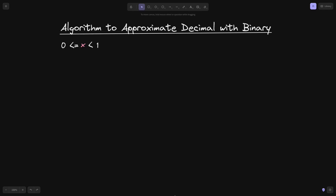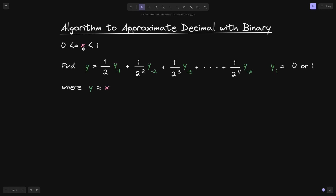Let's say we have a number x between 0 and less than 1. What we want to do is find y, where y approximates x. y is in the form: 1 over 2 times y₋₁, plus 1 over 2² times y₋₂, plus 1 over 2³ times y₋₃, and so on up to 1 over 2ⁿ times y₋ₙ. Each of these yᵢ's are either 0 or 1. We're approximating x with a sum of powers of 1 over 2.